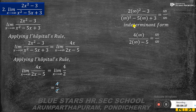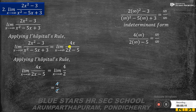Since the indeterminate form ∞/∞ has no defined answer, we apply L'Hôpital's rule. Differentiating the numerator: derivative of 2x squared is 4x, derivative of 3 is 0. Differentiating the denominator: derivative of x squared is 2x, derivative of 5x is 5. So we get limit x tends to infinity of 4x by (2x minus 5). Substituting x equal to infinity gives 4·∞ by (2·∞ minus 5), which is infinity by infinity — still indeterminate.